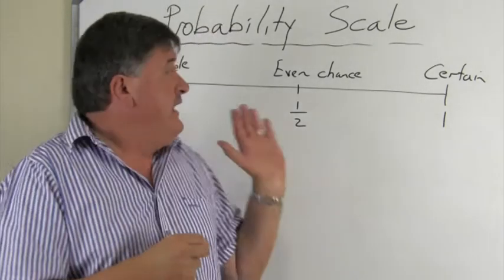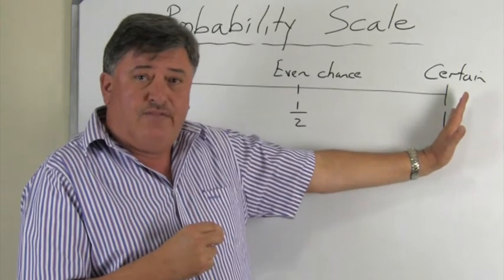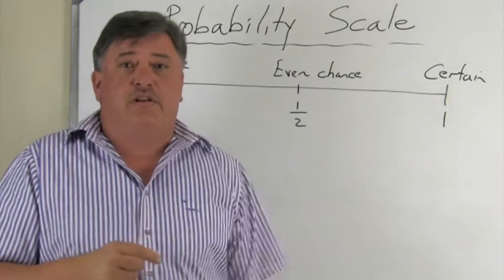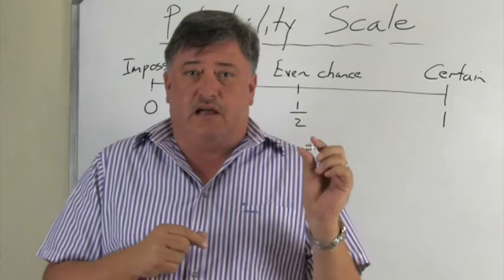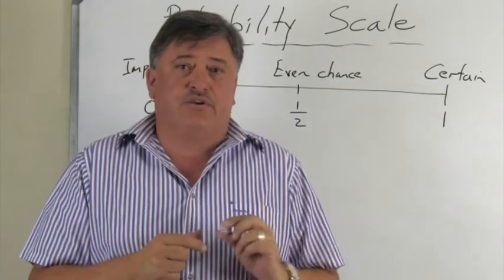On the other end of the probability scale, we have a probability of one. Now, when I look at the die again, and I ask you the question...